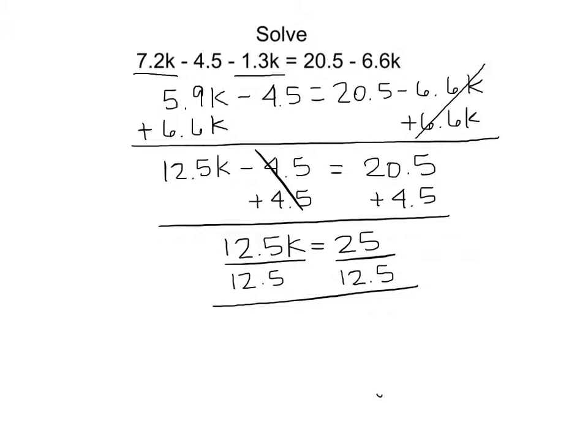12.5 over 12.5 reduces to 1, so I'm left with k on the left equals 2 on the right. That's the solution to the equation: k equals 2.